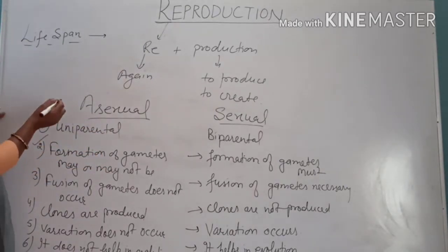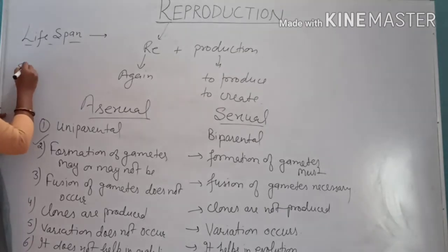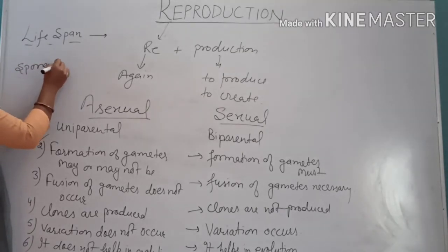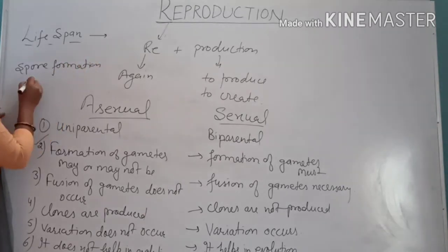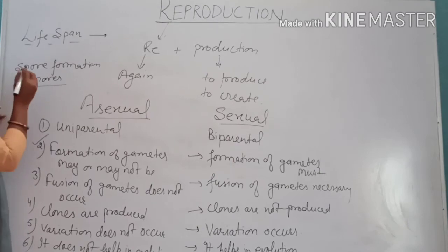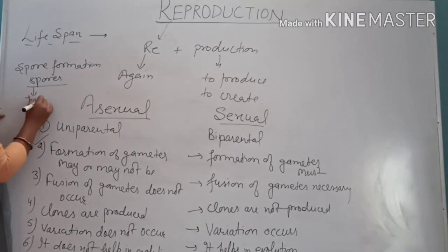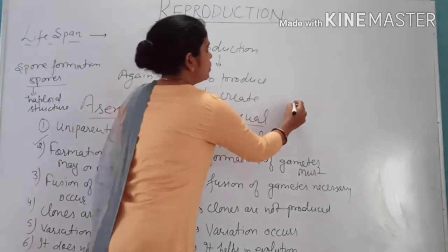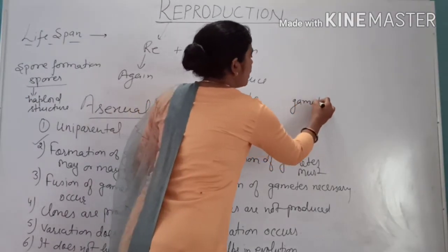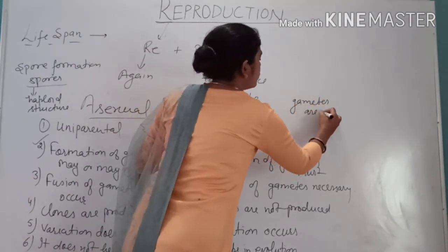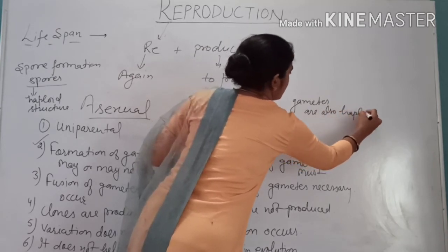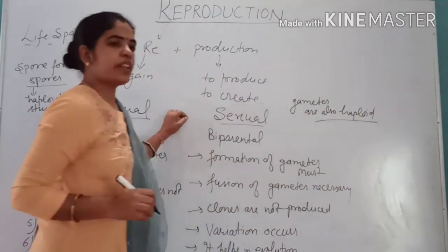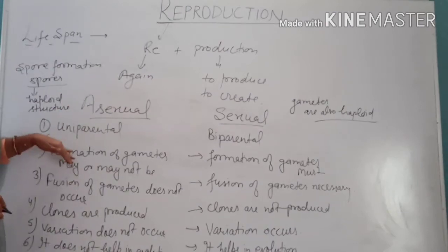If we look at some asexual reproduction methods, one is spore formation — for example, in the case of fungi where spores are formed. Spores are haploid structures. Gametes are also haploid structures. So during asexual reproduction via spore formation, spores are involved rather than gametes.